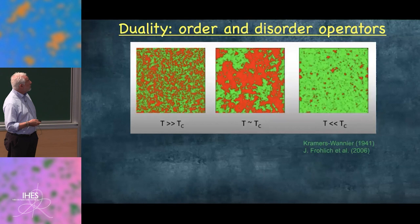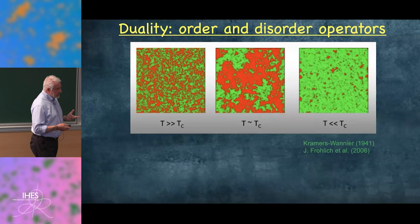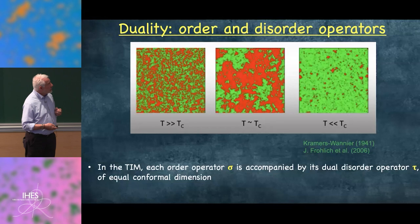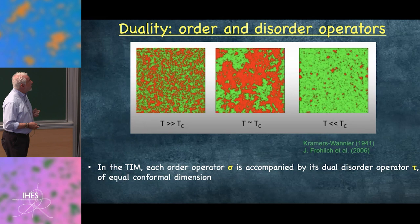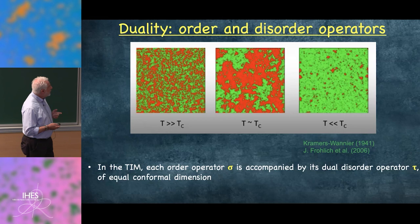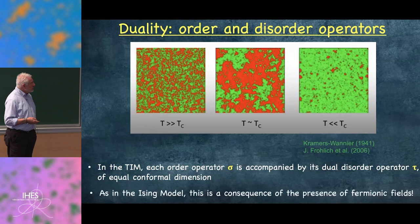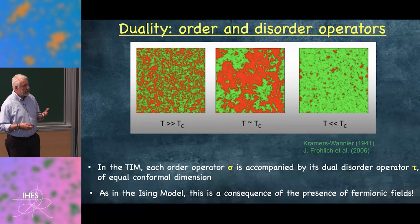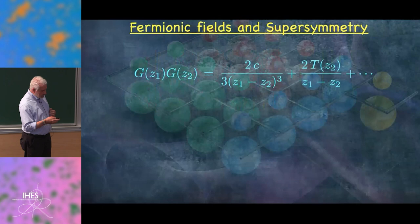I'd like to dig into the duality of this model — the possibility to have order and disorder operators. This is the mapping between low and high temperature pointed out by Kramers and Wannier in 1941. In the tricritical Ising, each order operator is accompanied by a dual operator tau of equal conformal dimension. As in the Ising model, this is a simple consequence of the presence of fermionic fields — here they are not free, but the logic is exactly the same.